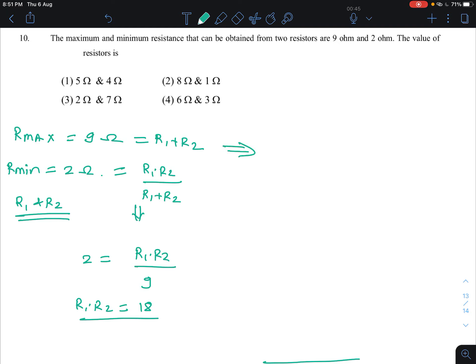Here we will substitute 9 minus R2 is equal to R1. So 9 minus R2 into R2 is equal to 18.